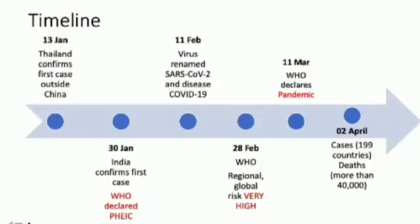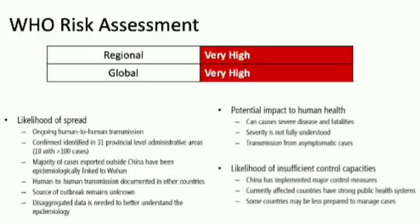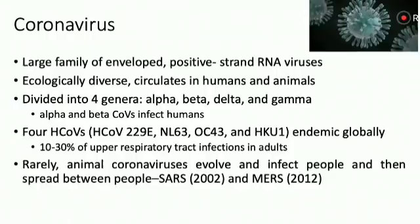As of 2nd April, more than 200 countries are affected and this disease has led to more than 40,000 deaths. The WHO risk assessment at the WHO Southeast Asia region as well as the global level is very high, because of ongoing human-to-human transmission, its potential impact to human health, and the likelihood of insufficient control capacities in many countries including high-income and low-income countries.